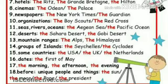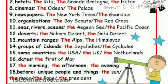Number ten: organizations — the Boy Scouts, the Red Cross. Number eleven: seas and rivers — the Asian Sea, the Pacific Ocean. Number twelve: deserts — the Sahara Desert, the Gobi Desert. Number thirteen: mountain ranges — the Alps, the Himalayas.